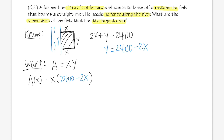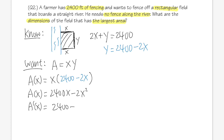Distributing: A(x) = 2400x − 2x². Taking the derivative: A'(x) = 2400 − 4x. Setting equal to zero: 2400 = 4x, so x = 600. That's our critical number.